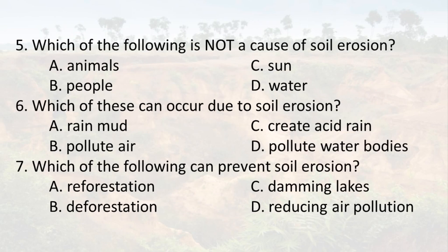5. Which of the following is not a cause of soil erosion? A. Animals. B. People. C. Sun. D. Water.